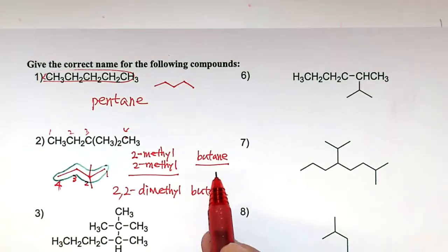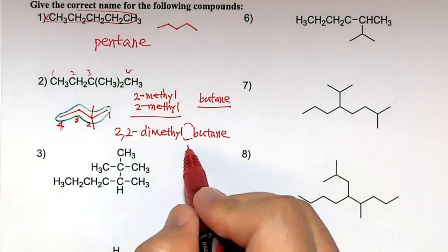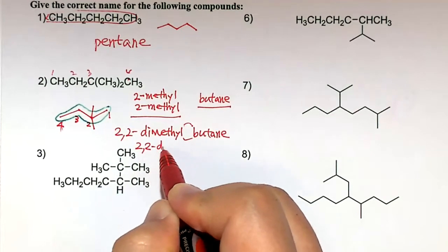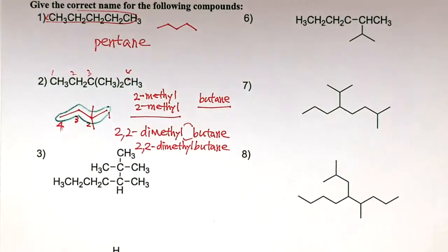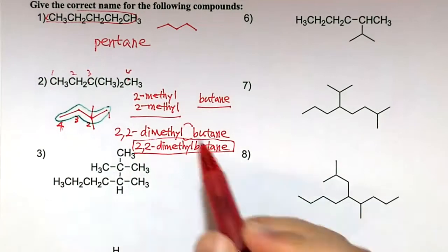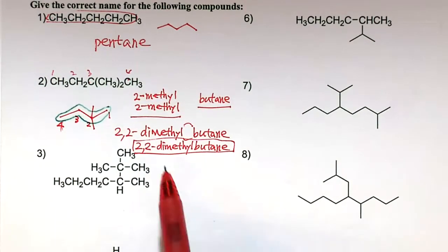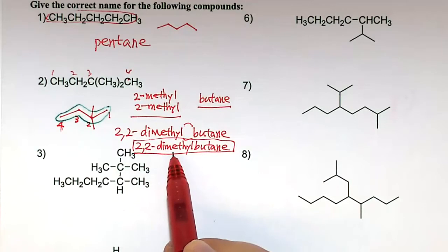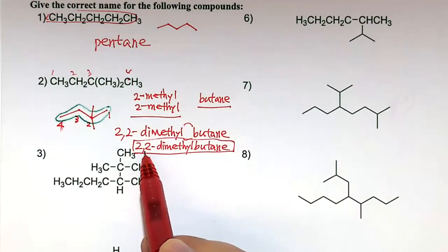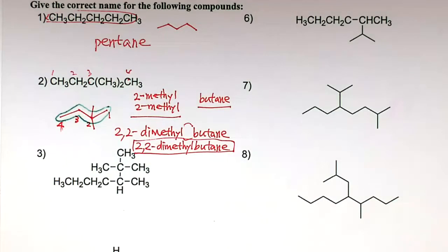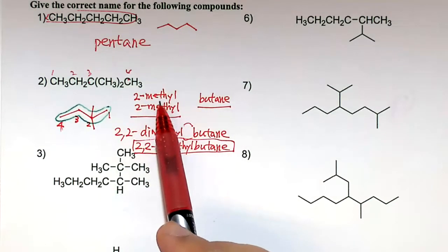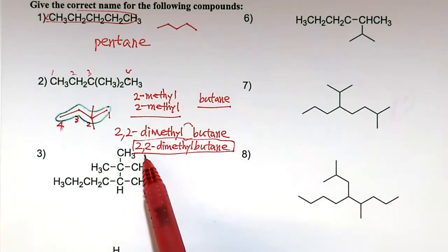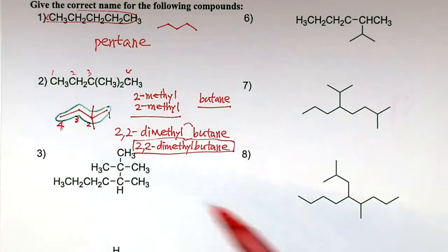The branch: number 2 has a methyl group, and there's another methyl group also at number 2. The longest chain is butane. So this is 2-methyl-2-methyl-butane, shortened to 2,2-dimethylbutane. The IUPAC name is one word. There are hyphens between numbers and letters, and commas between numbers. So: 2,2-dimethylbutane. Two methyls at position 2 means dimethyl.